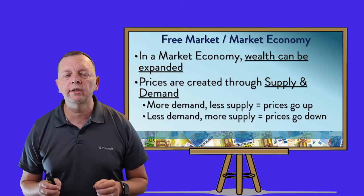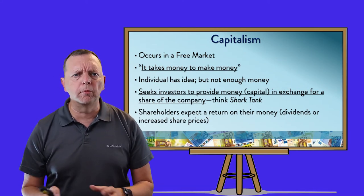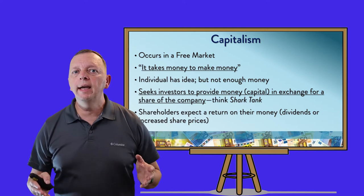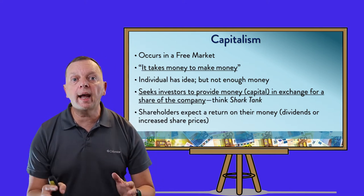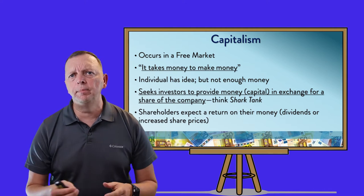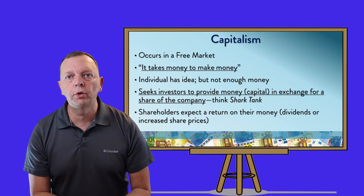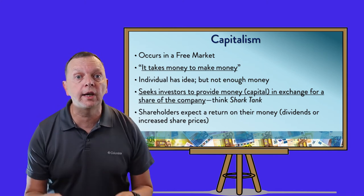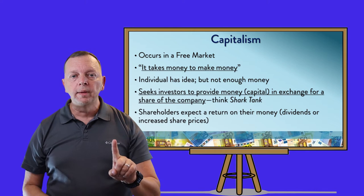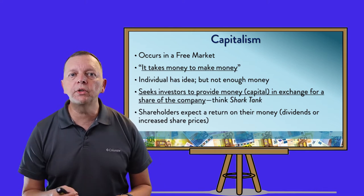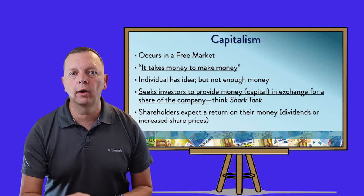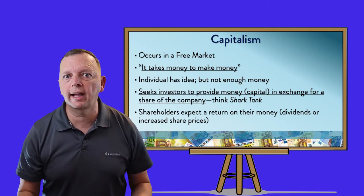Now, we also have a term known as capitalism. Many people would interchange capitalism with free market as the same word, but it is a little bit different. Capitalism will only occur in a free market and it's based upon the idea that it takes money to make money. Let's say you have a great idea for a product but you don't have money — you're going to need money to buy land, to build a factory, to purchase materials, hire employees, make test runs, and buy advertising. You're going to spend a lot of money before you actually sell a single product. So where do you get the money? In capitalism, you will seek investors to give you money, also known as capital. In exchange, you're going to give them a share of the company.